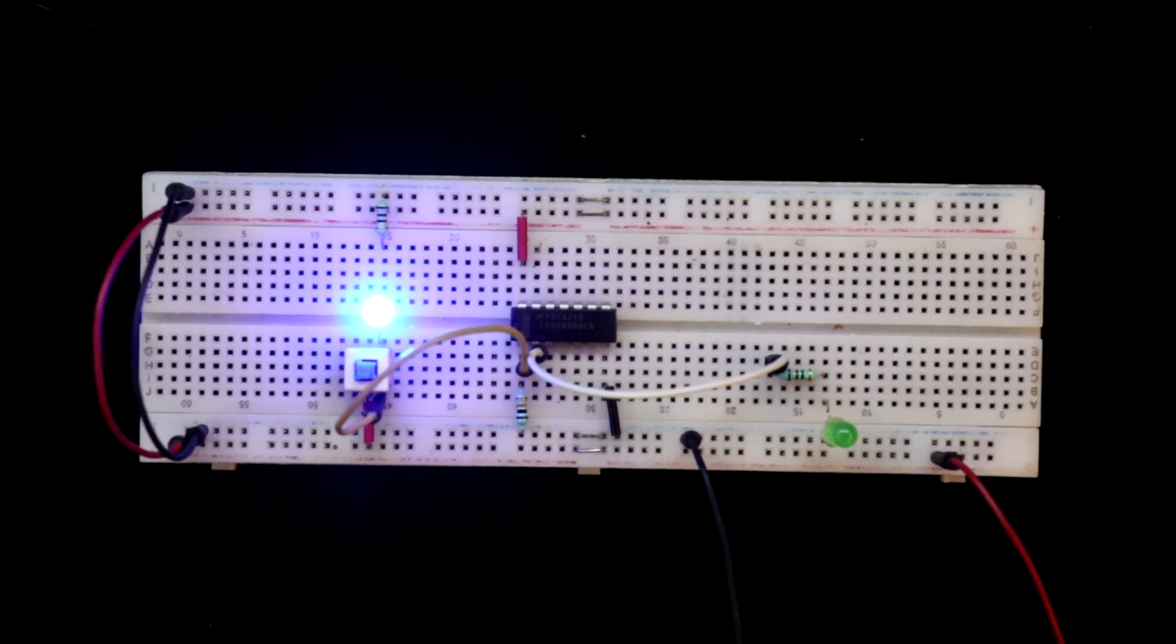So this is NOT gate. And this IC has 6 of them. So this is the basic thing of CD4069. So guys, this is all for today. Thanks for watching.